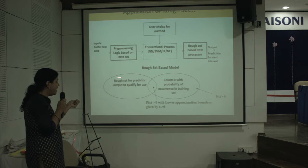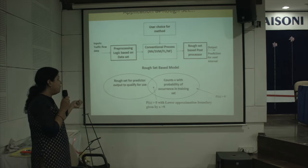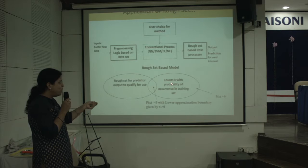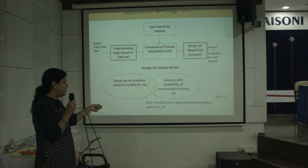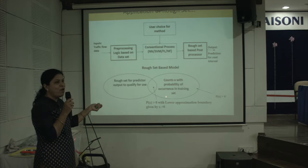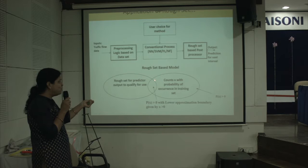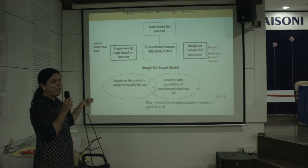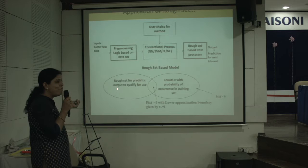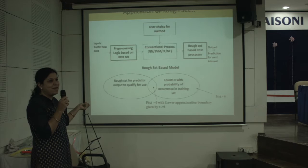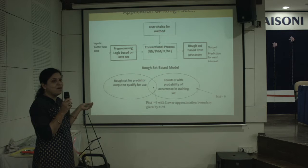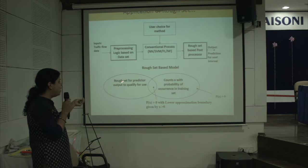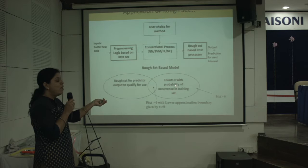In the rough set-based model, after the usual prediction methods generate predictions, rough set validates each predicted value. The left ellipse indicates values predicted by soft computing but not in the training set; the right ellipse indicates values present in the training set with probability of occurrence greater than zero. Their overlap represents valid predicted values that are part of the target set. Values predicted outside the training set contribute to large error; rough set maps these to the nearest value having probability greater than zero.